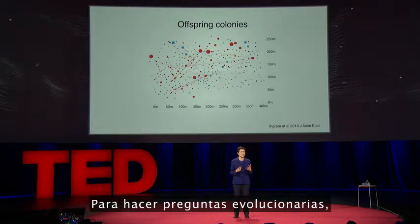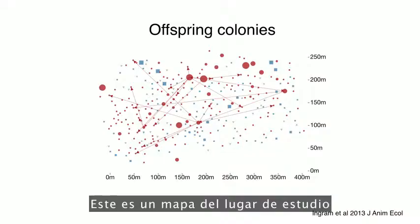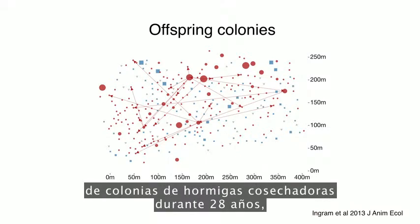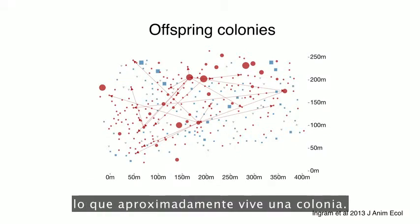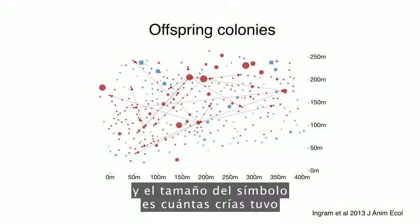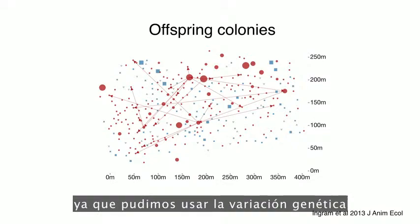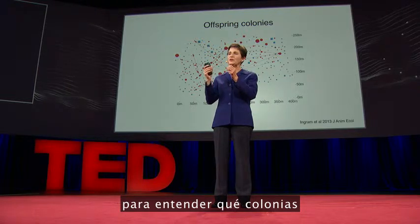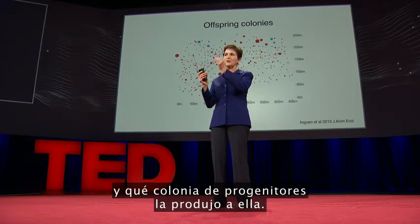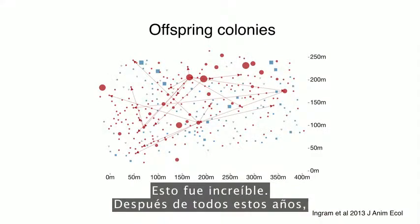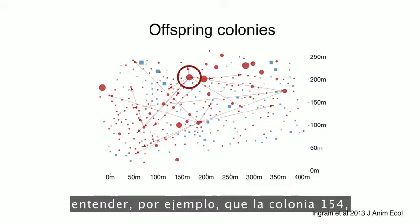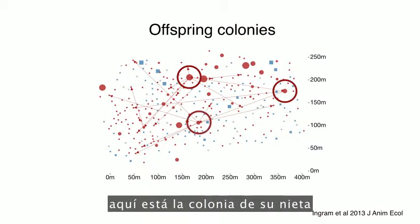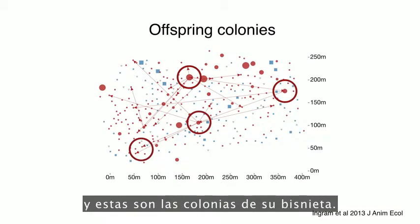In order to ask evolutionary questions, we need to know about reproductive success. This is a map of the study site where I've been tracking this population of harvester ant colonies for 28 years, which is about as long as a colony lives. Each symbol is a colony, and the size of the symbol is how many offspring it had. We used genetic variation to match up parent and offspring colonies — to figure out which colonies were founded by a daughter queen produced by which parent colony. And it was amazing to find out that Colony 154, whom I've known well for many years, is a great-grandmother. Here's her daughter colony, here's her granddaughter colony, and these are her great-granddaughter colonies.